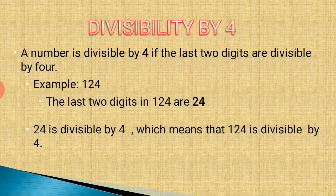Next is the divisibility rule of 4. A number is divisible by 4 if the last 2 digits are divisible by 4. For example, suppose the number is 124. In this number the last 2 digits are 24, and 24 is divisible by 4, which means the whole number 124 is divisible by 4.